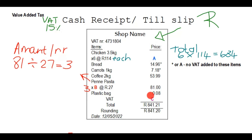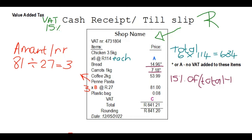This person also got a plastic bag for 8 cents. Now we're looking for C — the total amount of VAT. VAT is 15% of the total amount. However, some items had no VAT added — the bread at R14 and the carrots at R7.18 — so we deduct those amounts from the total. Note that 15% means 15 of 100, and 'of' changes to multiplication.